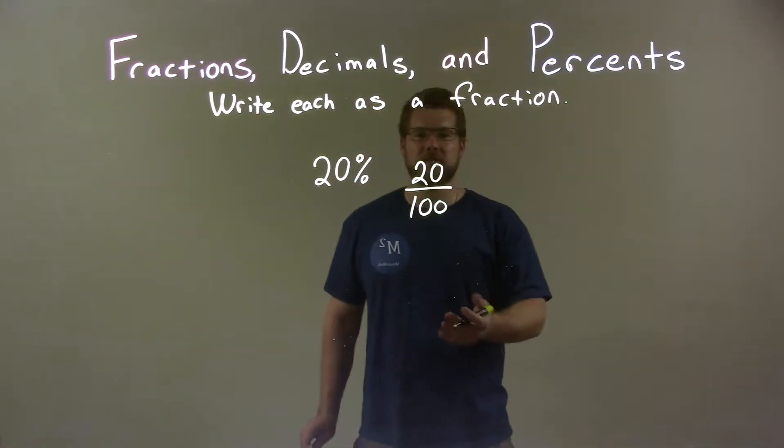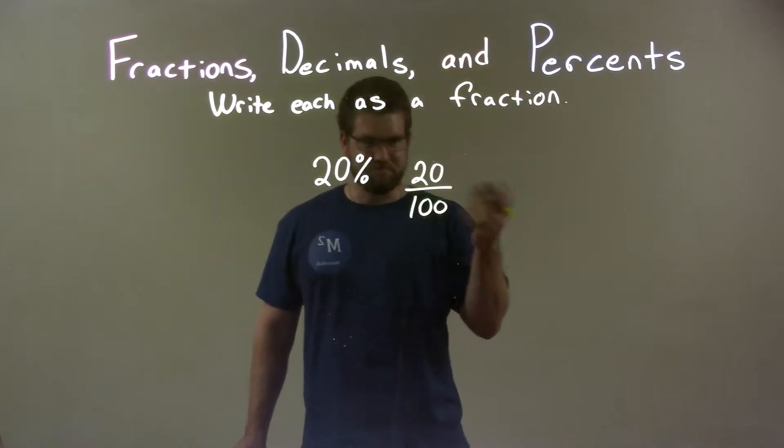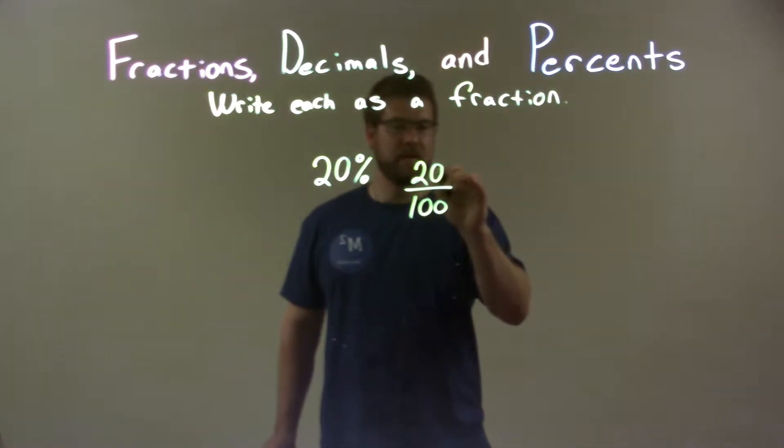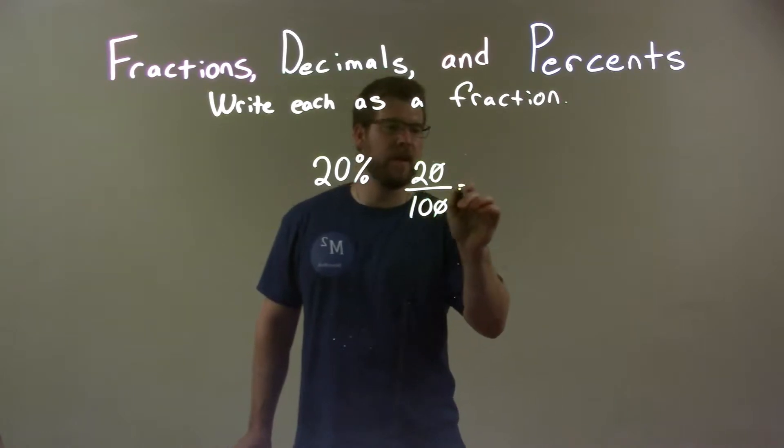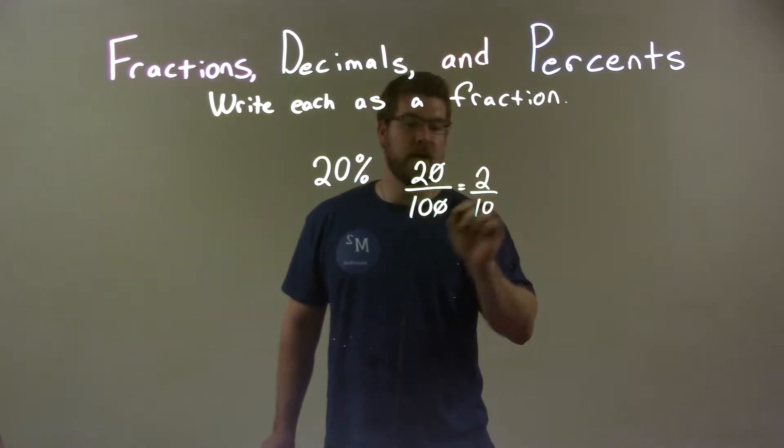Alright, so now we have a fraction but we need to simplify it. Well, pretty straightforward, right? Zeros, we can cancel out the zeros, divide them both by 10, and that gives us 2 out of 10.